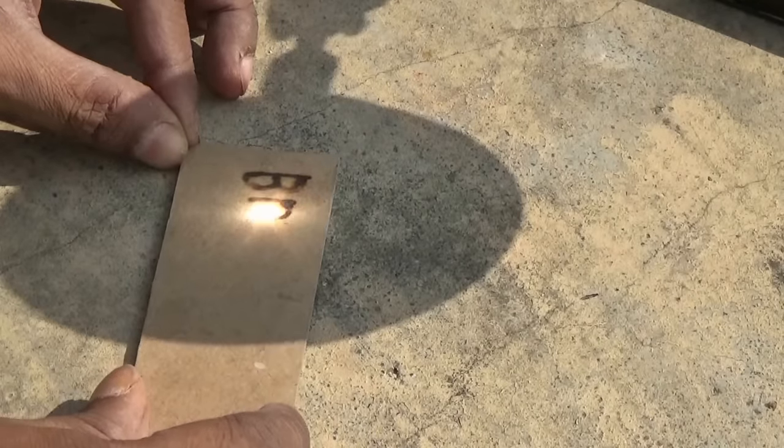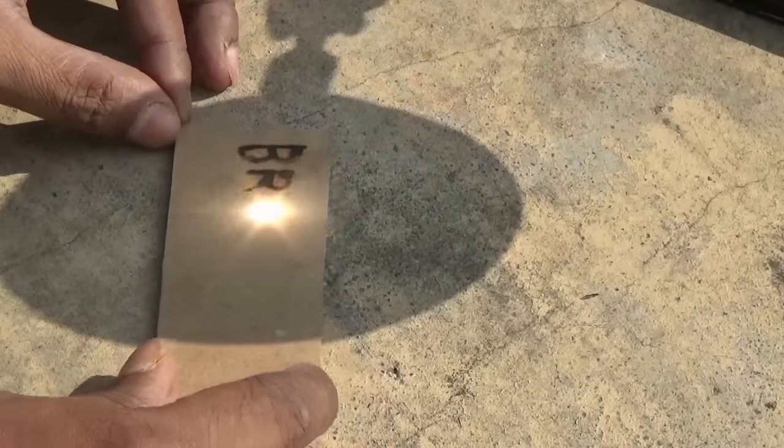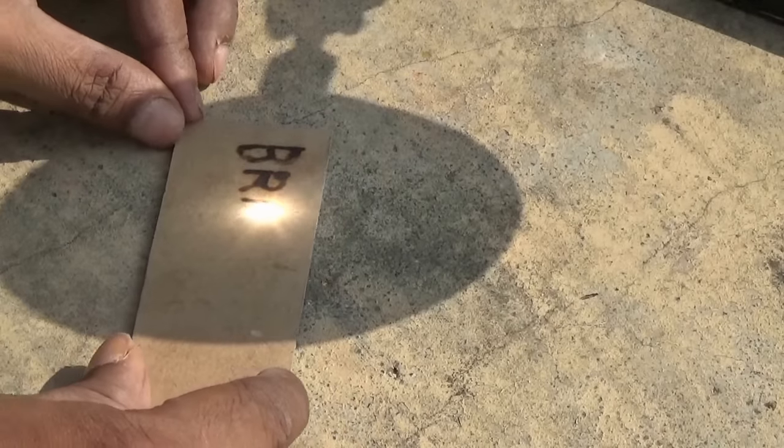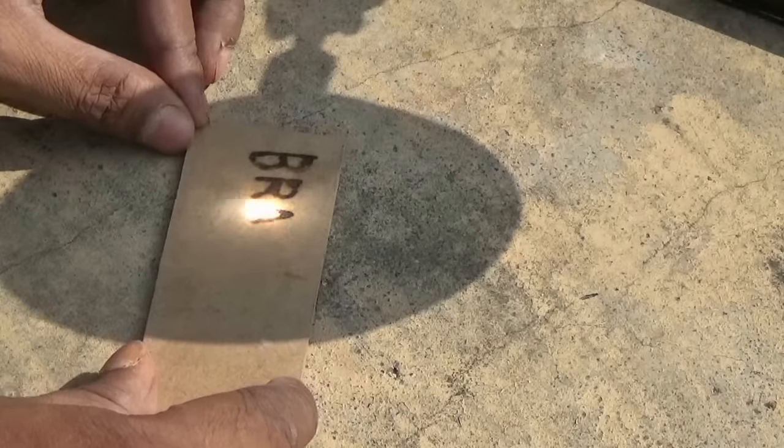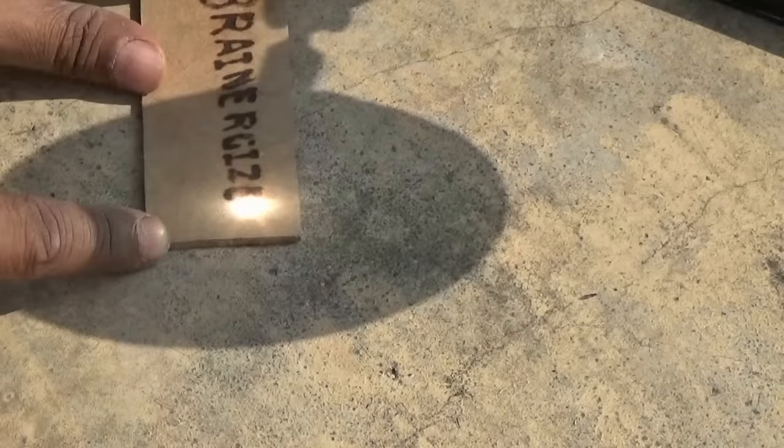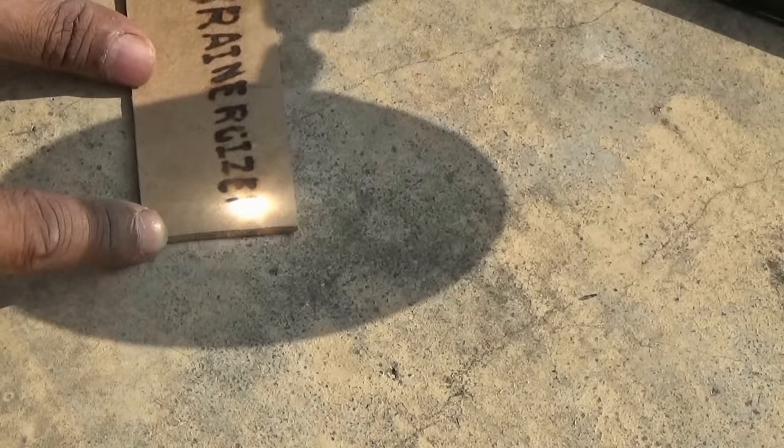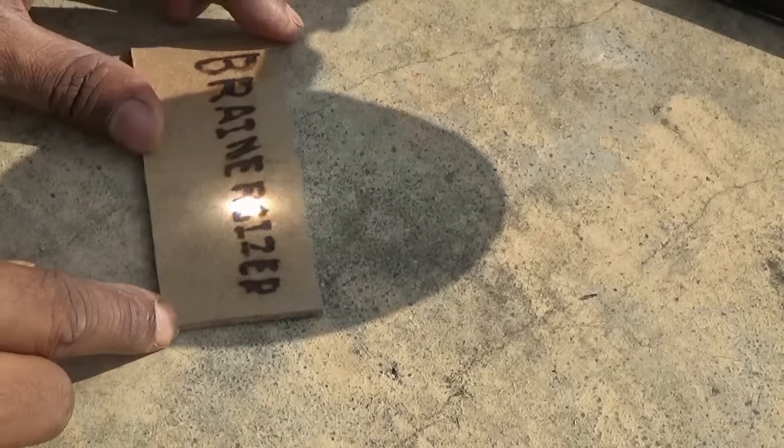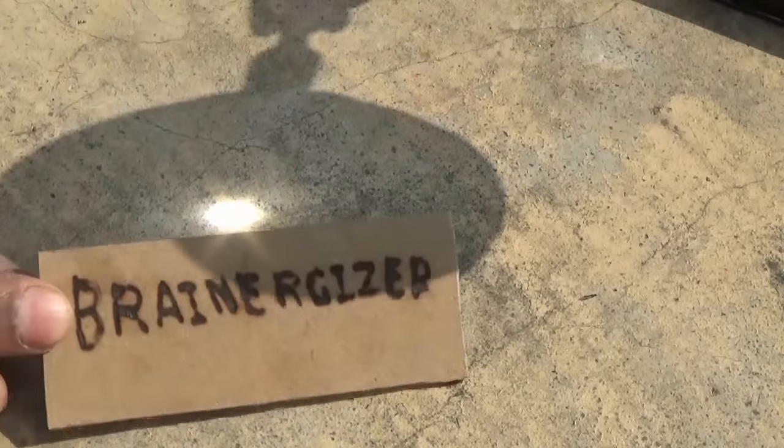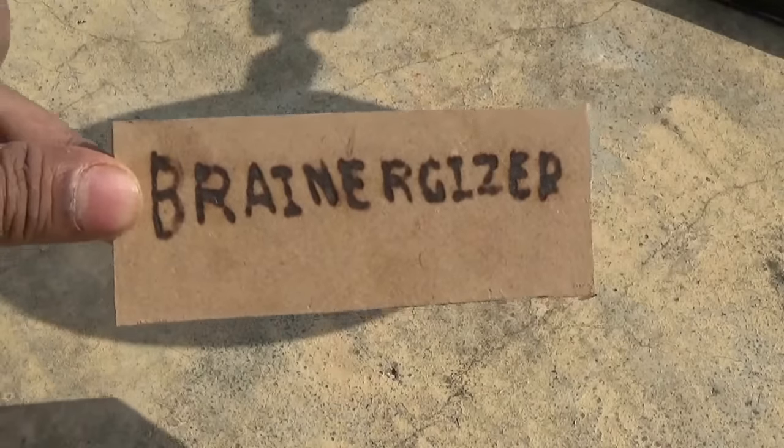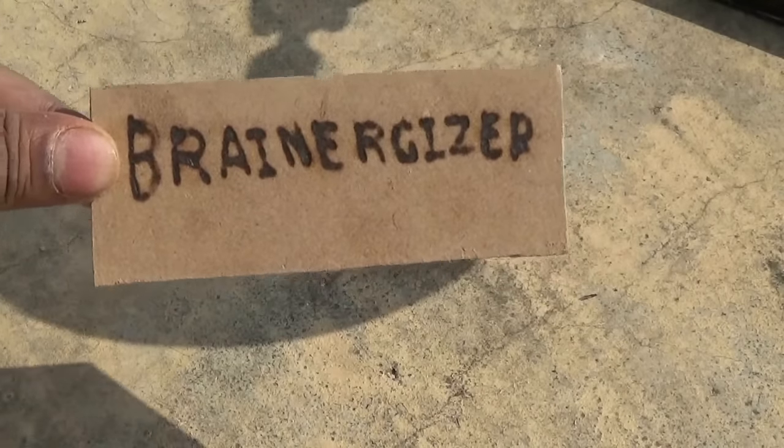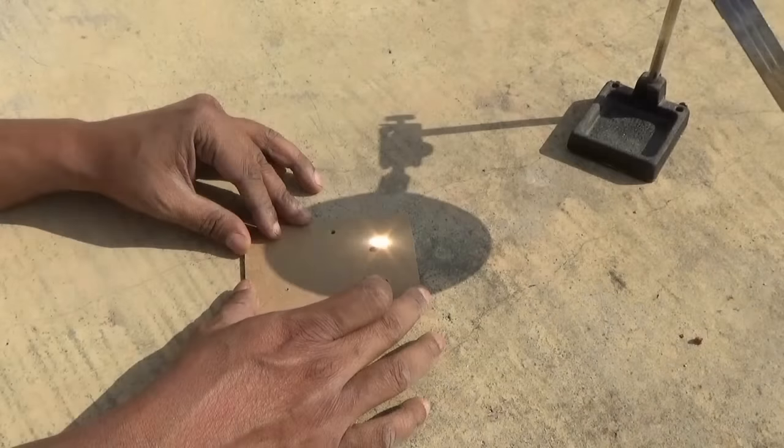Then I am writing R. Like that, carefully, you can write on wood or paper, whatever you want to write. Or you can draw something, some design also. This is my first solar signature. Now if you want, you can draw something like a flower.